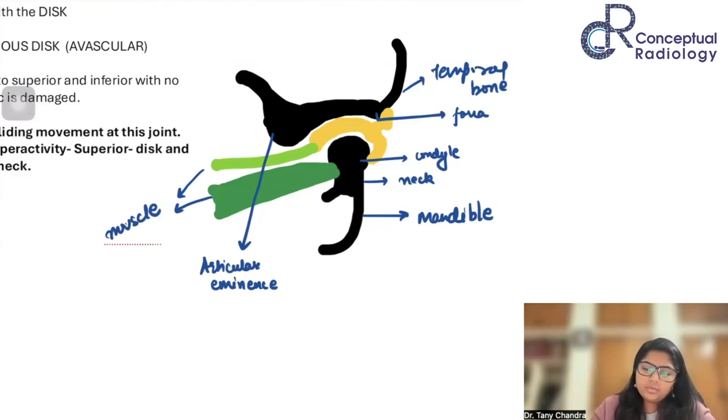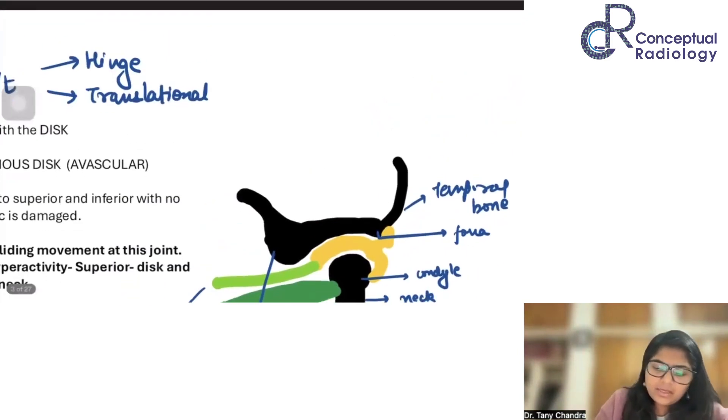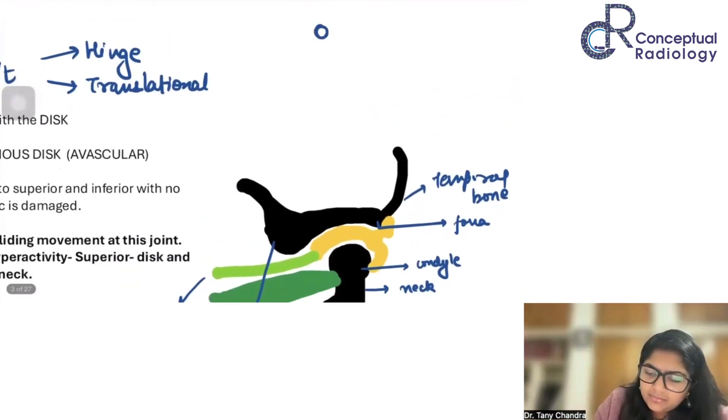For any joint, what happens is you have bones. Here the joint is formed between the temporal bone and the mandible. Mandible, specifically only the condyle. It has a globular outline. This is where the round curve movement is going to be. And the fossa of the temporal bone is forming the cup in which this will rotate. What would translation mean? Translation would mean, suppose this is the movement.